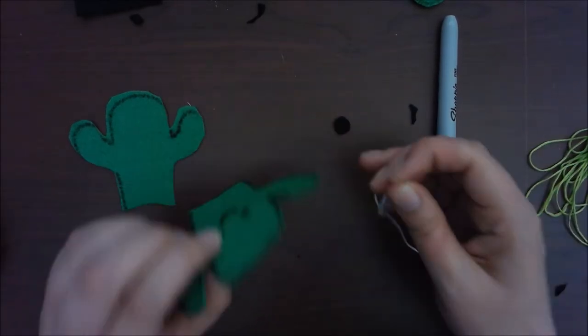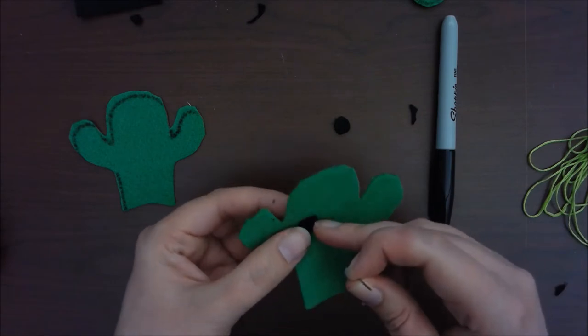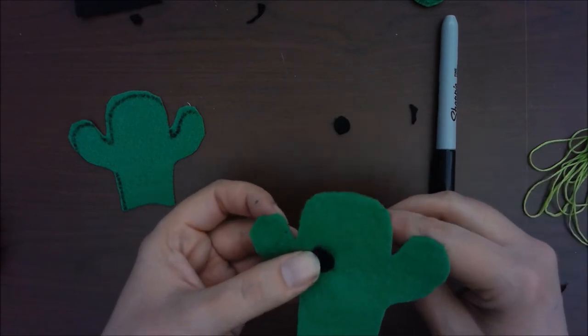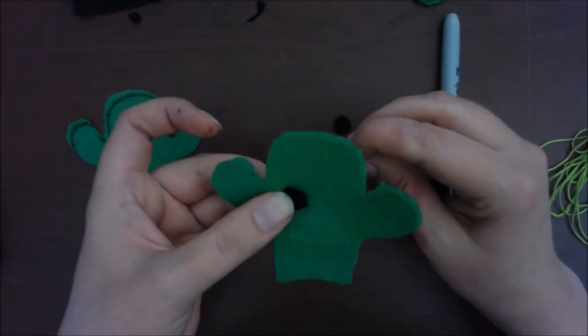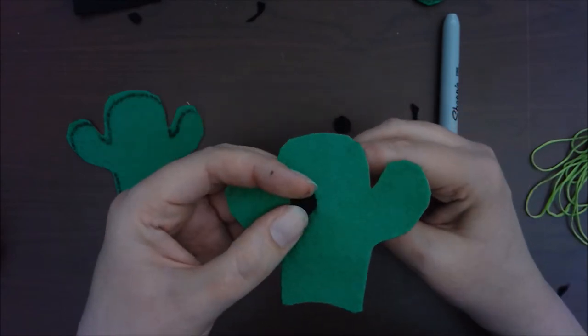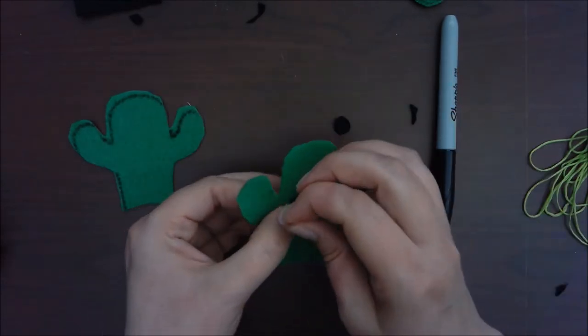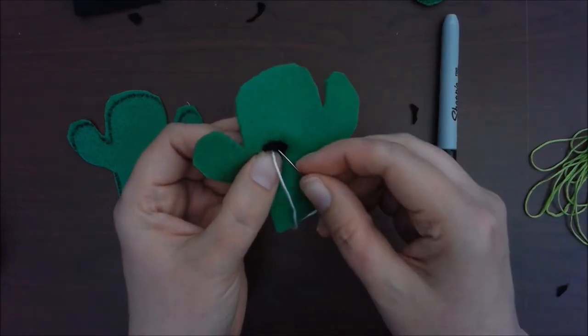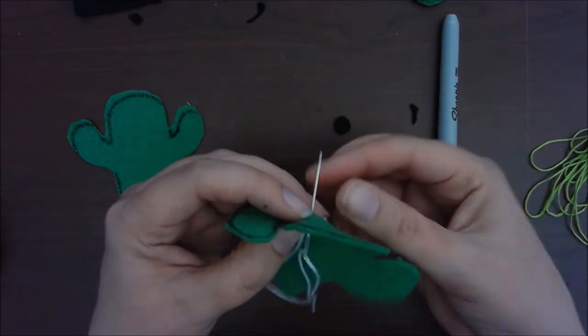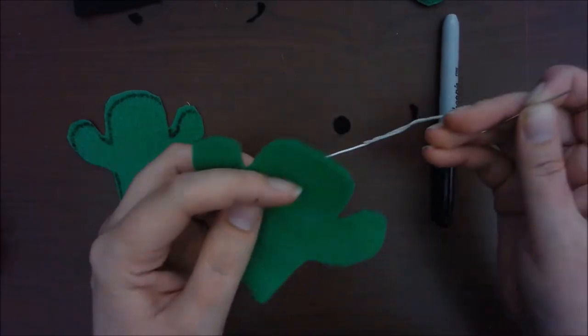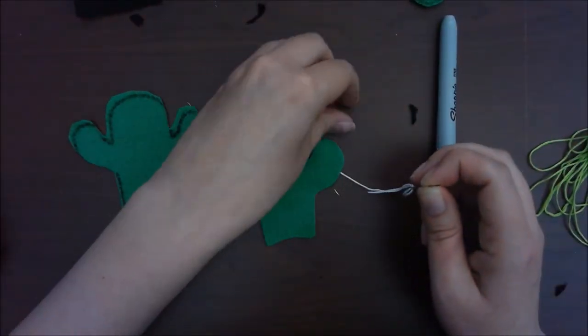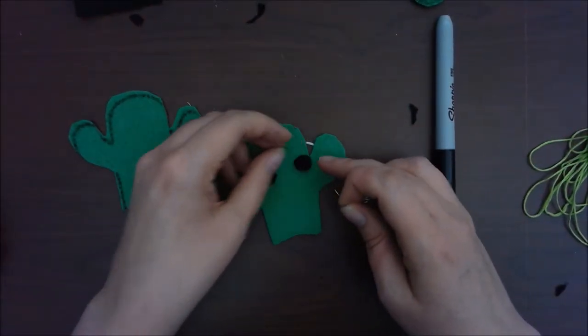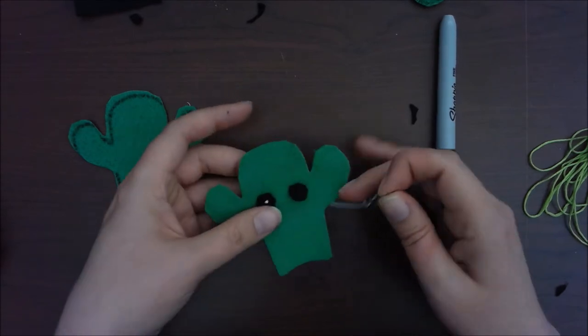Once your needle is threaded, we're going to go from behind the cactus. As you can see, I kind of measured it up with the eye that I drew on the back. And we're going to pull the white thread through. Mine was a little tricky so yours might be too. And we're just going to do a single tiny little stitch like that. And then we're going to line up our next one and do the same.